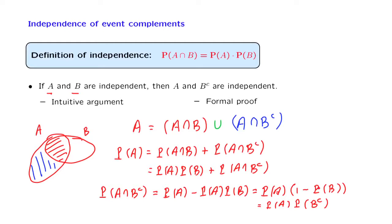So we proved that the probability of A and B complement occurring together is the product of their individual probabilities. And that's exactly the definition of A being independent from B complement. And this concludes the formal proof.